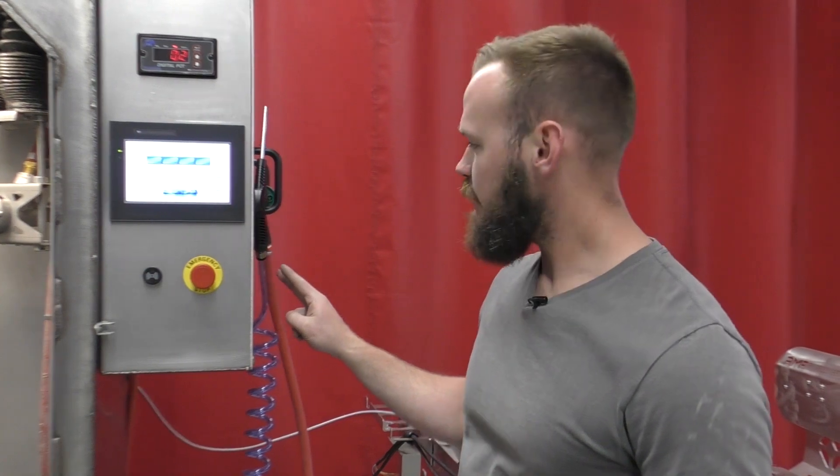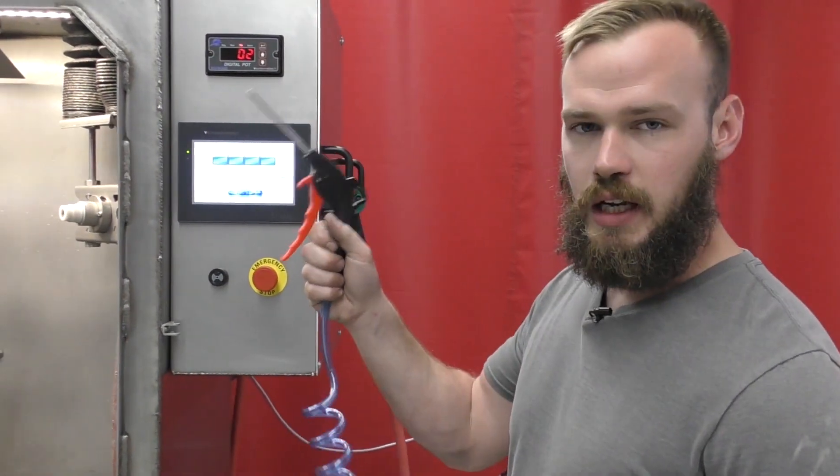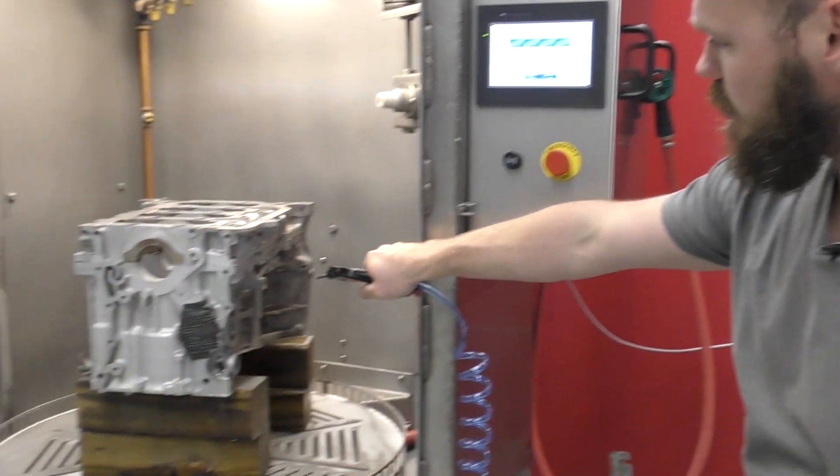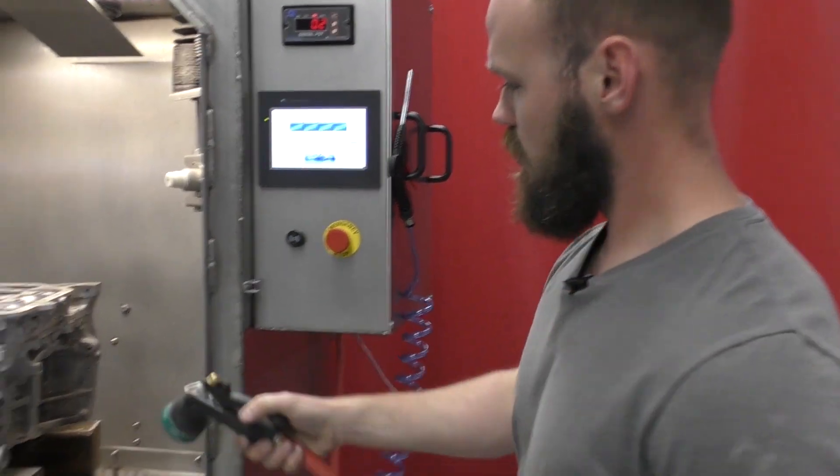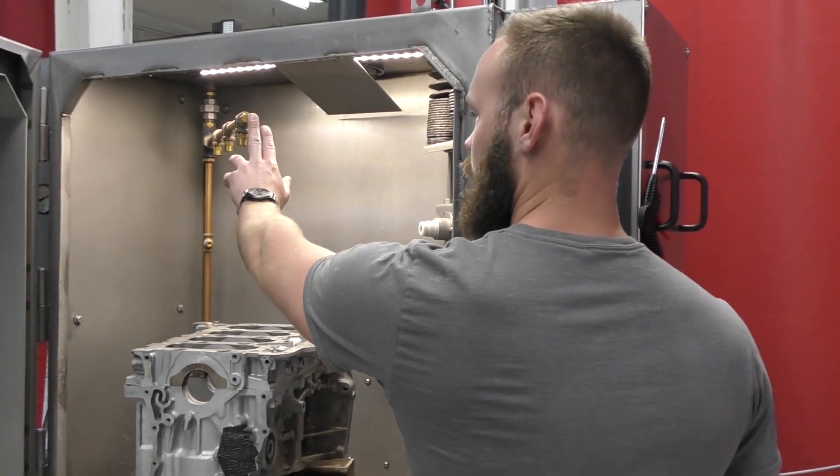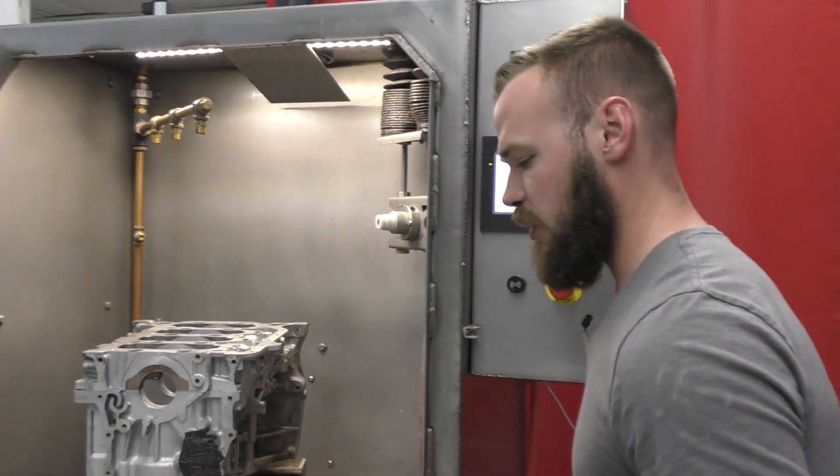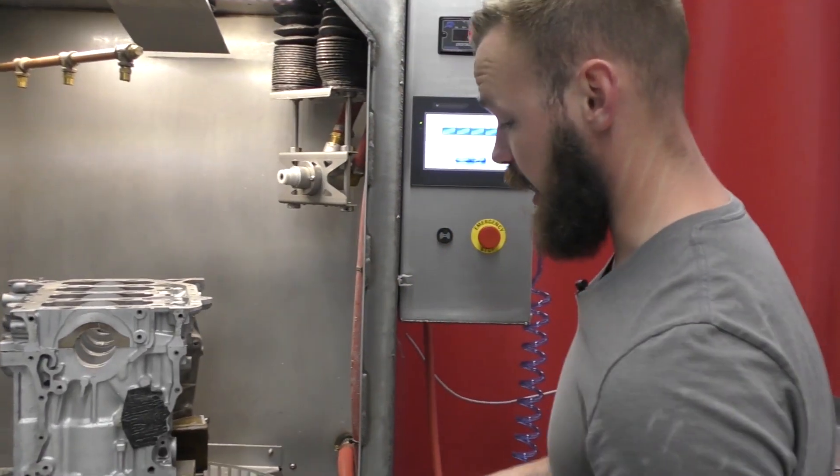Two things that this machine also has, we have an air dry off, we also have an external rinse. That way if the internal rinse does not completely rinse the part or you want to wash all your media down back into the hopper, you can just use this bypass.